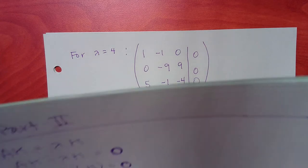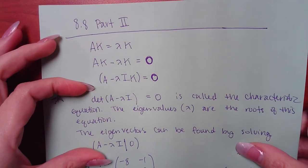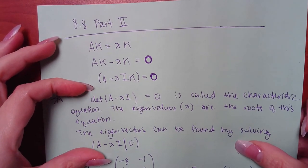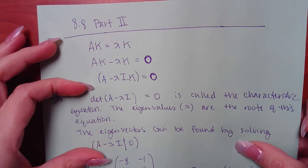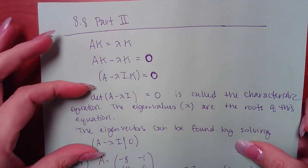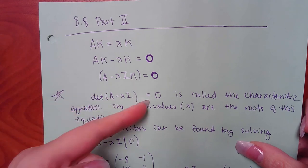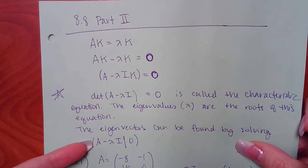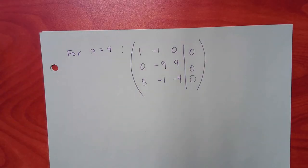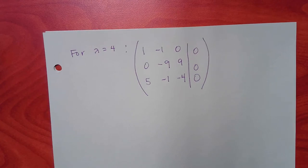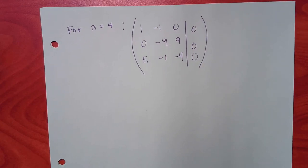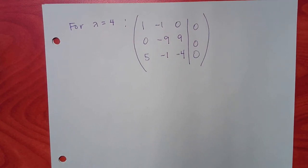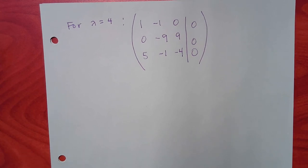Note: on the test, you'll be given the procedure — both the characteristic equation formula and how to find the eigenvectors — so you won't need to memorize the setup. The chapter 10 formulas will also be provided.